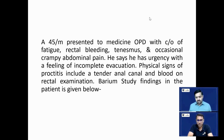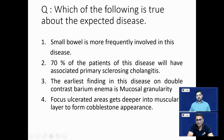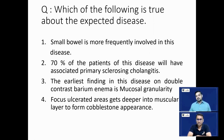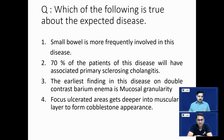Now let us look at the barium image given for this patient. Which of the following is true about the expected disease? Option A: Small bowel is more frequently involved. Option B: 70% of patients will have associated primary sclerosing cholangitis. Option C: The earliest finding on double contrast barium enema is mucosal granularity. Option D: Focal ulcerated areas get deeper into the muscularis layer to form a cobblestone appearance. Now, the question has given you clinical and radiological information; on the basis of that, make a diagnosis and pick the correct answer.